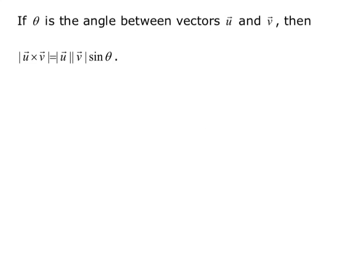If theta is the angle between vectors u and v, then the magnitude of u cross v is equal to the magnitude of u times the magnitude of v times sine theta. Notice that this is the length of u cross v.